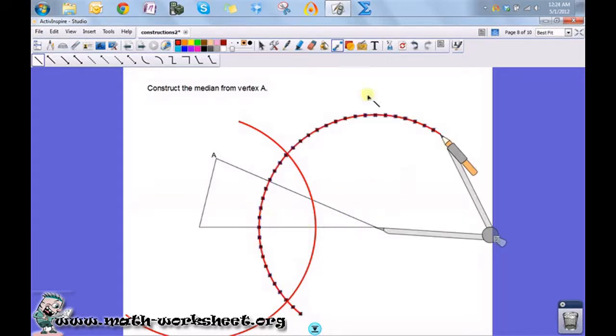I want to make sure those two arcs intersect twice, because when I draw a line through them, the point where this line segment intersects this side is the midpoint.